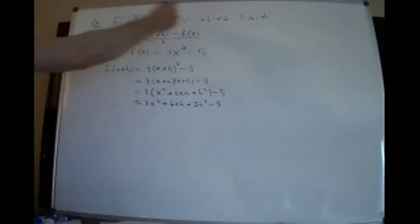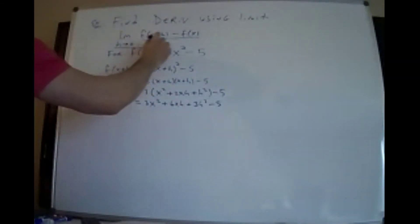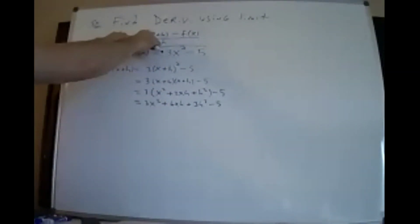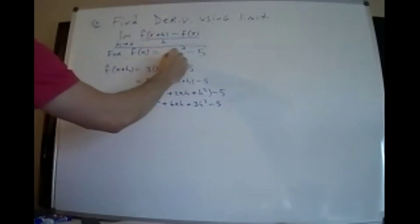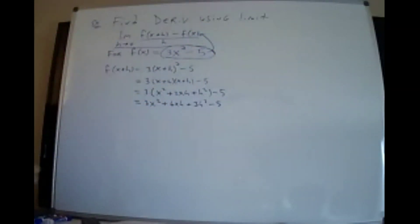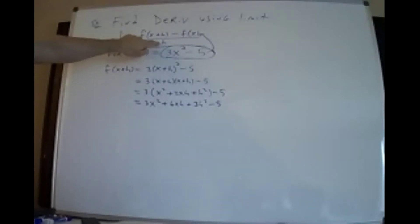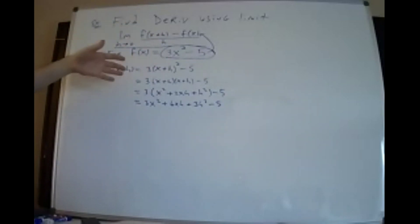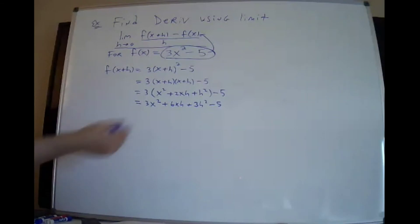Now you've got to plug this into the limit definition formula. Plug f(x+h) here and plug f(x) here, and simplify. What's your goal? Kill the h on the bottom. You have to cross out all the terms that don't have an h in them — they will all cancel. Everything left will have an h, and those h's are going to knock out the h on the bottom. This is your goal.